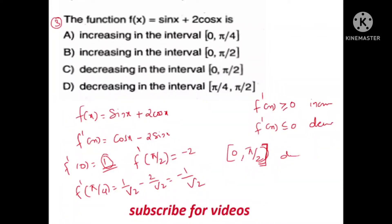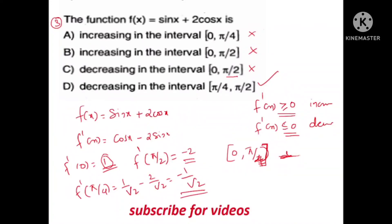This function will decrease because f'(x) is negative. If f'(x) is negative, this function will decrease. If f'(π/2) is less than 0, then we have two conditions in the option. Checking the option, f'(π/2) is minus 2 and f'(π/4) is minus. If f'(x) is less than 0, then the option is decreasing. Option D is the answer.